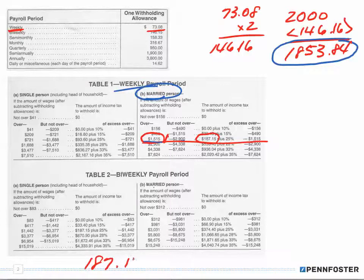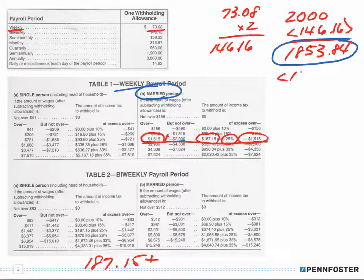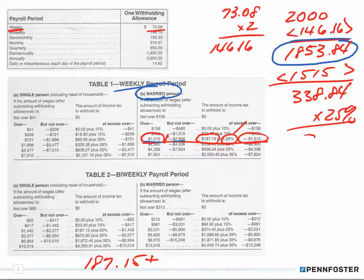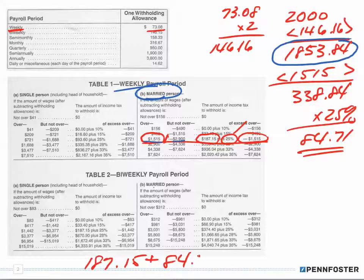So we have $187.15, which is the amount withheld on the base of $1,515. Now we need to find the amount over $1,515. We subtract $1,515 from $1,853.84, giving us $338.84. That's the amount over $1,515, and we multiply it by 25%, which the table tells us to use. That gives us $84.71 — the tax on the overage.